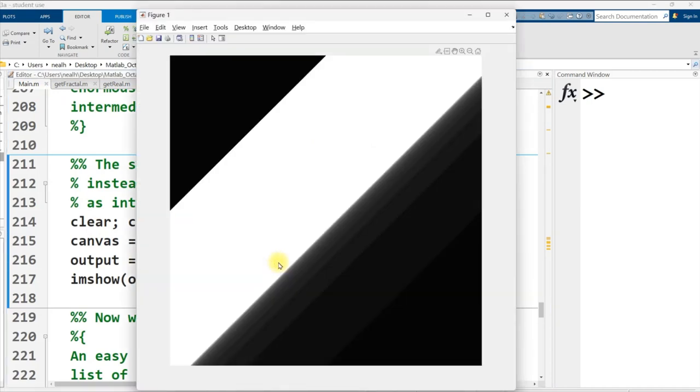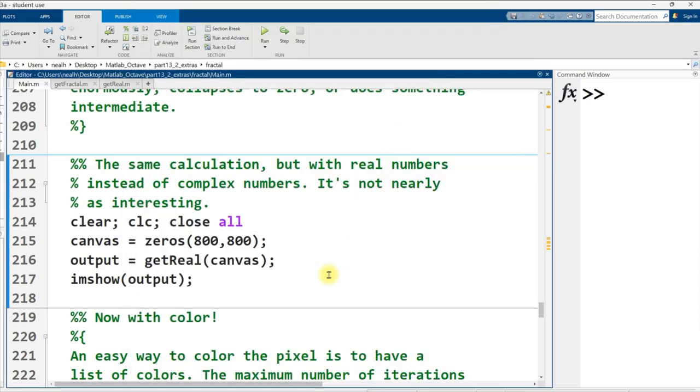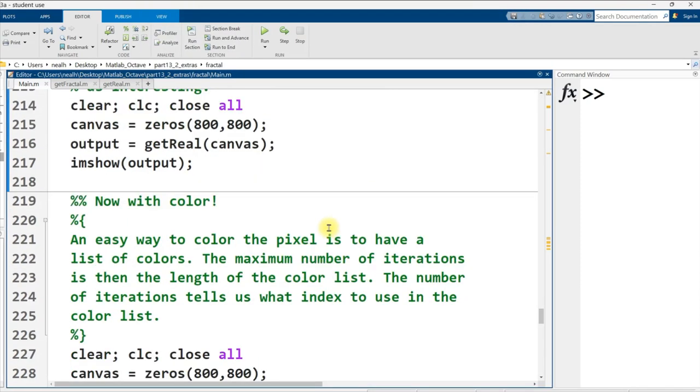And what's the graph look like? Well, it looks like a stripe, a diagonal stripe. It's very boring. It's very easy to predict whether your starting number is going to go beyond the radius 2 circle around the origin or not. I just wanted to contrast that because it's the imaginary number that's really adding in all these interesting features.